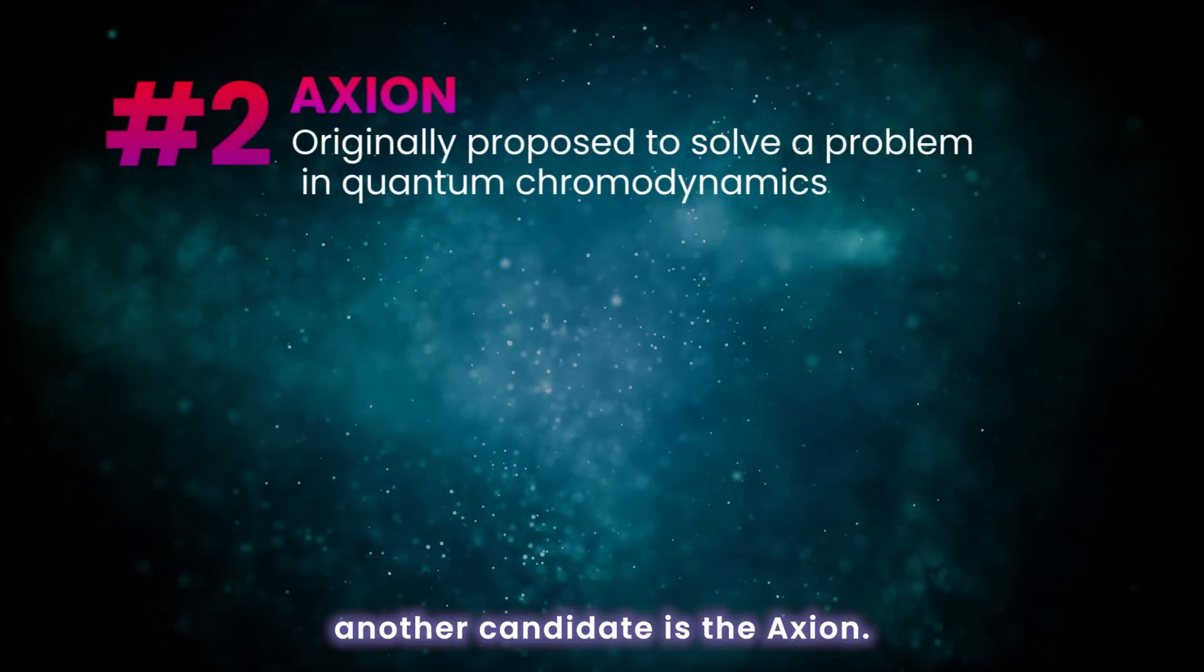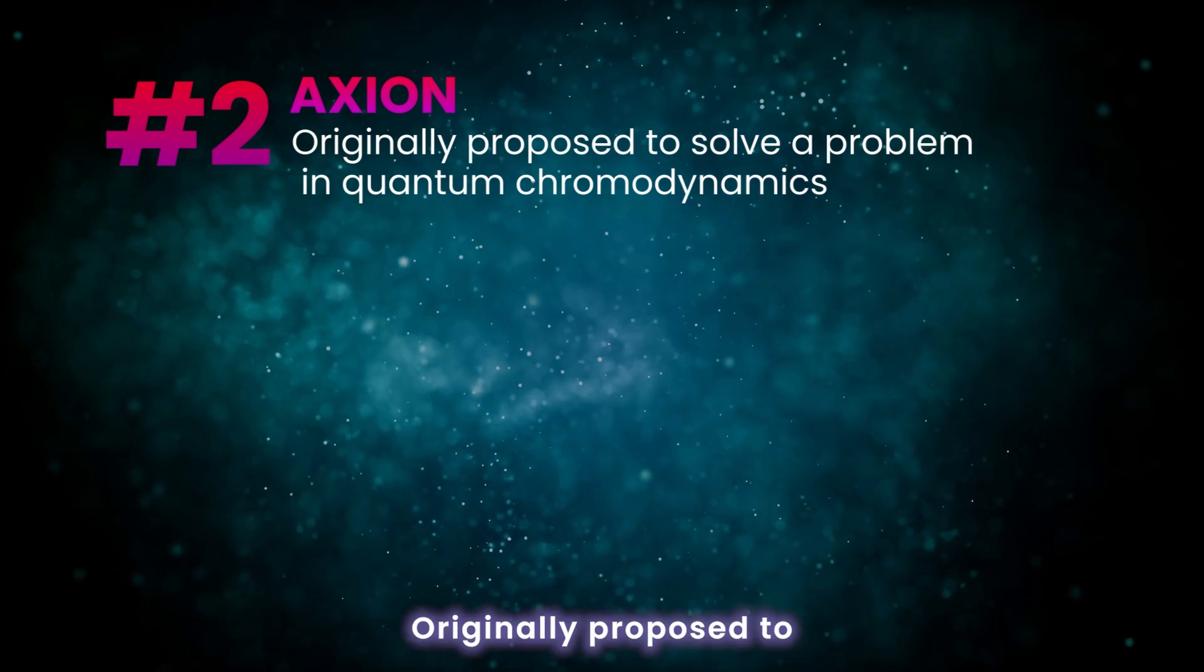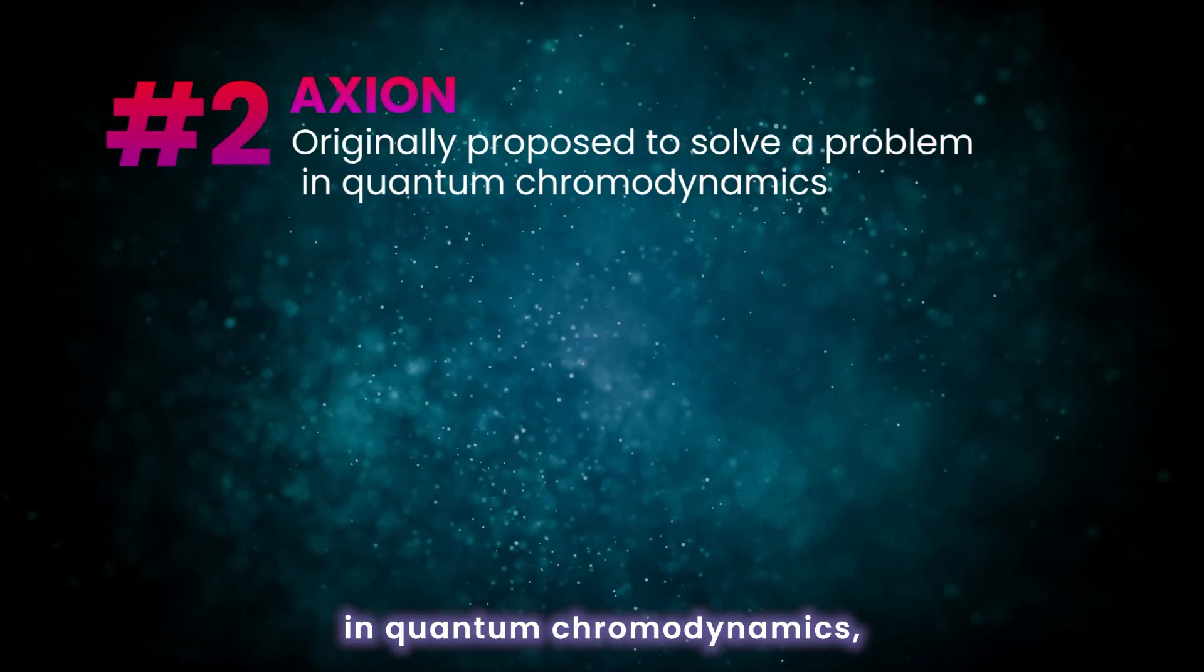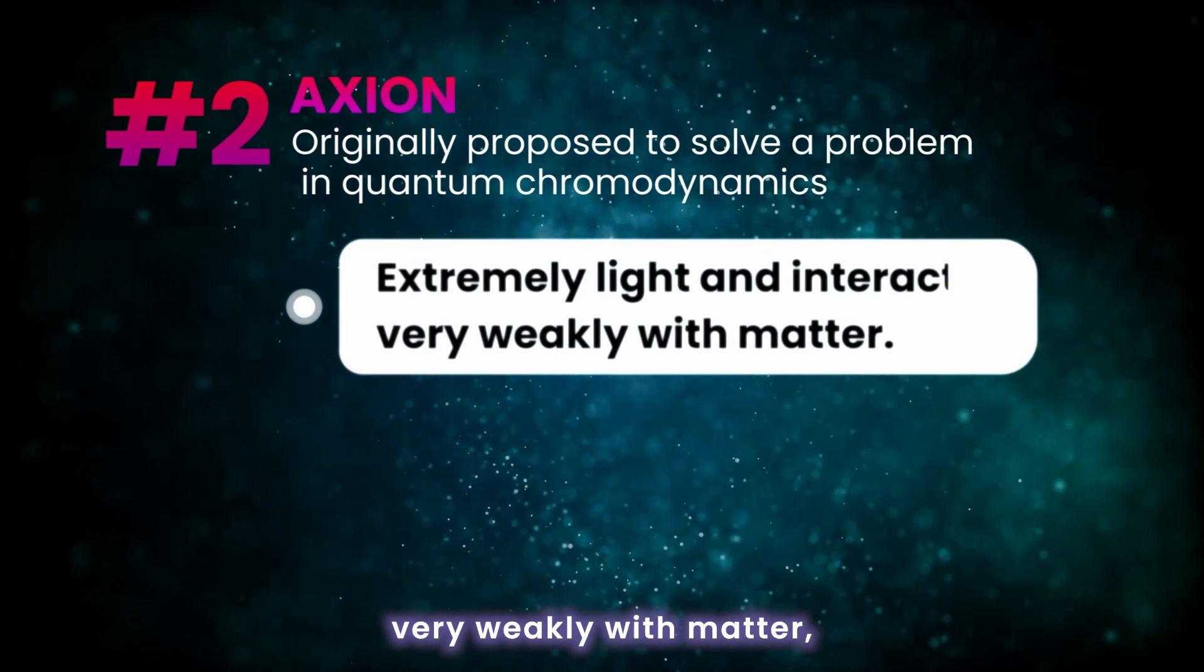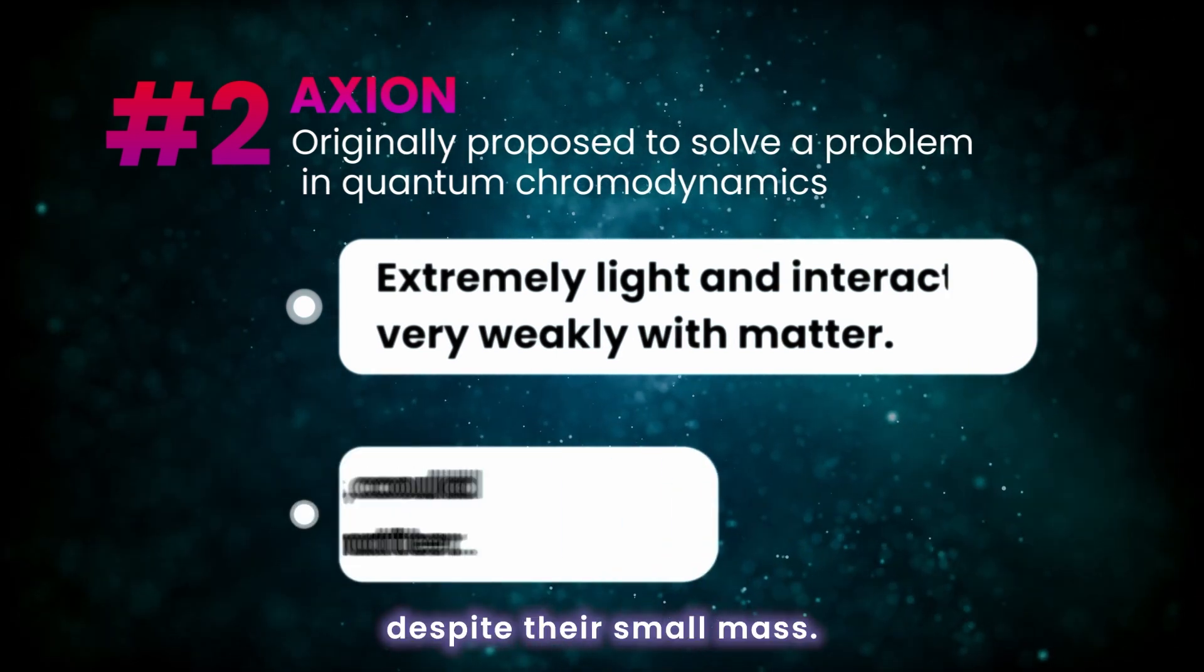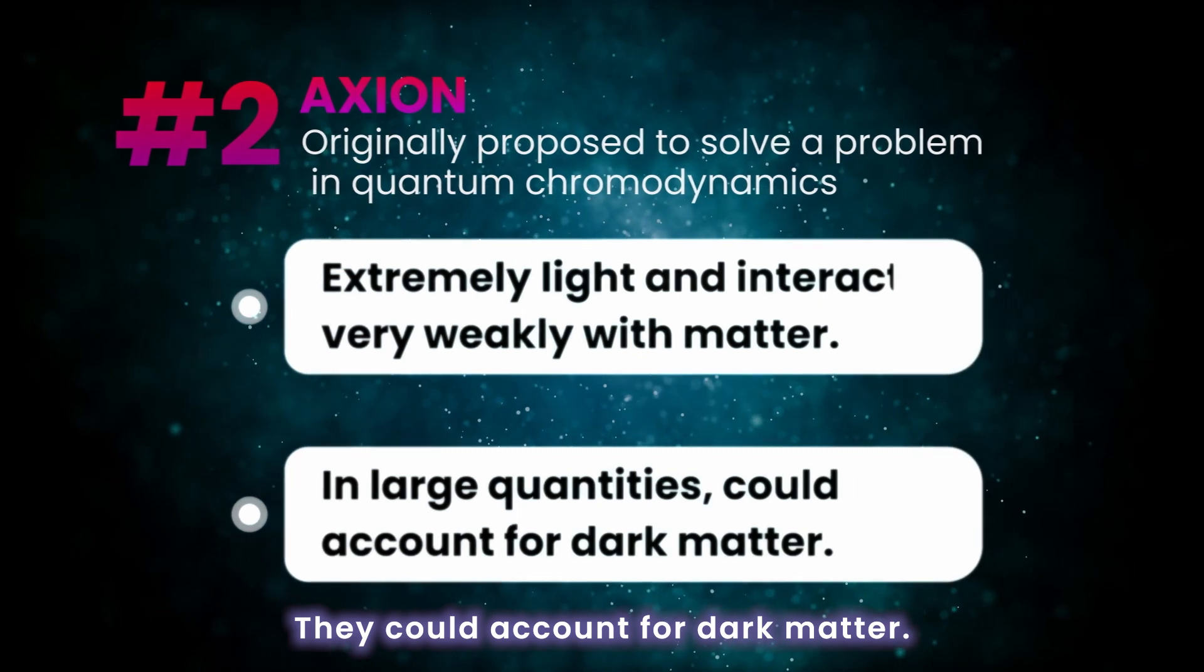Another candidate is the axion. Originally proposed to solve a problem in quantum chromodynamics, axions are extremely light and interact very weakly with matter. Despite their small mass, if produced in large quantities, they could account for dark matter.